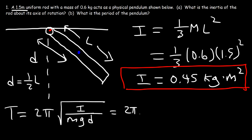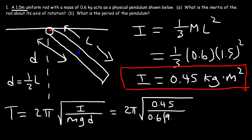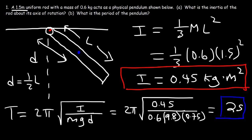So the period is going to be 2π times the square root of the inertia — which is 0.45 — divided by the mass of 0.6, times g = 9.8, times D = 0.75 meters. If you type this in you should get a period of about 2 seconds. That's how you calculate the period of a physical pendulum, especially when it consists of a long rod with nothing attached.